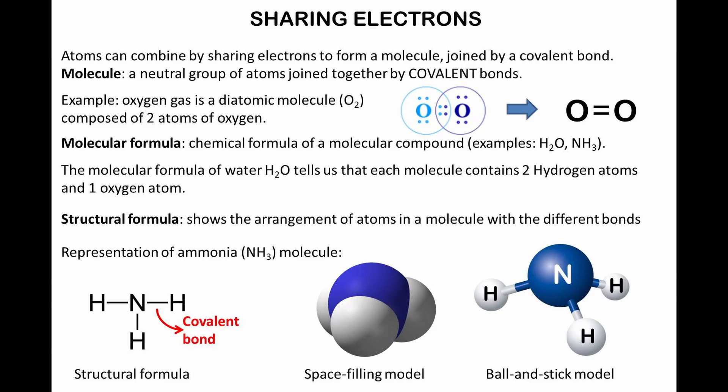Atoms can combine by sharing electrons to form a molecule, joined by a covalent bond. For example, oxygen gas is a diatomic molecule composed of two atoms of oxygen. A molecular formula is a chemical formula of a molecular compound. The molecular formula of water tells us that each water molecule contains two hydrogen atoms and one oxygen atom.